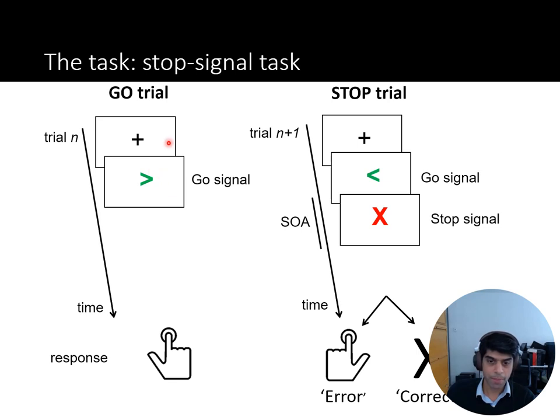So what's the task actually look like? Well, there's different trials, go trials and stop trials. On go trials, after a fixation cross and a random amount of time, there is a go signal that points to the left or the right, tells you to press the left or right button. Most of the trials are like that. In a few trials, after a short delay after the go signal, there's a red cross that tells you to withhold your response. And this delay here is variable. It's called SOA here, the stimulus onset asynchrony, but that's irrelevant. It's just a delay between these two stimuli.